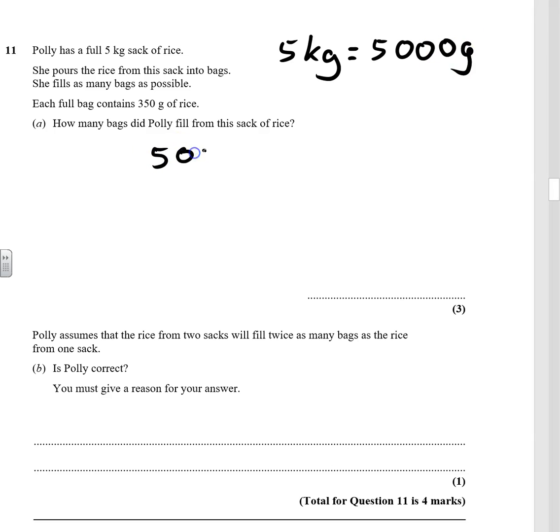So now we can do 5,000, which is the total amount of rice, divided by 350, which is how much is going in each bag. And that gives us 14.2.